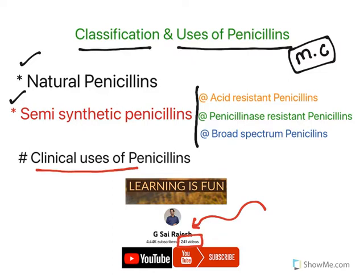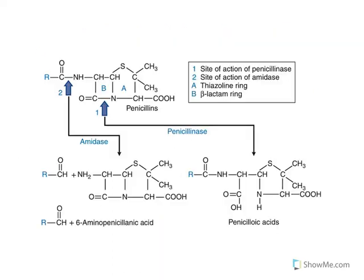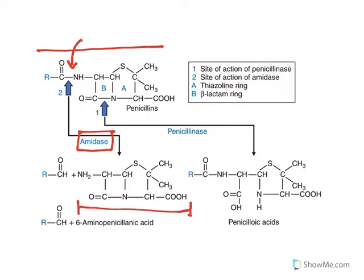So the basic penicillin structure is this one. The side chain can be affected by an enzyme called amidase. This enzyme cleaves the amide link and forms 6-aminopenicillanic acid and the side chain. The 6-aminopenicillanic acid structure and stereochemistry we have seen previously.